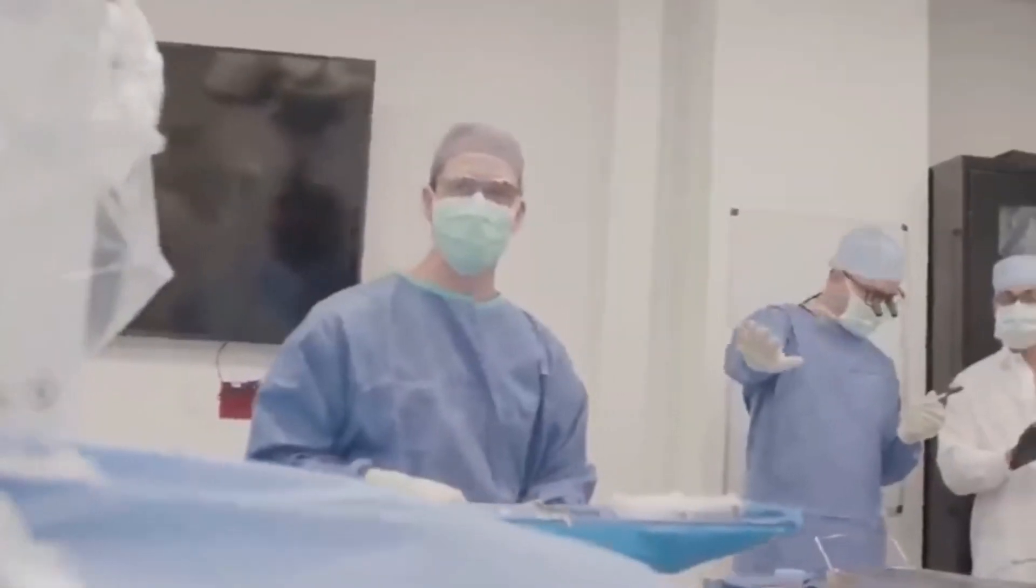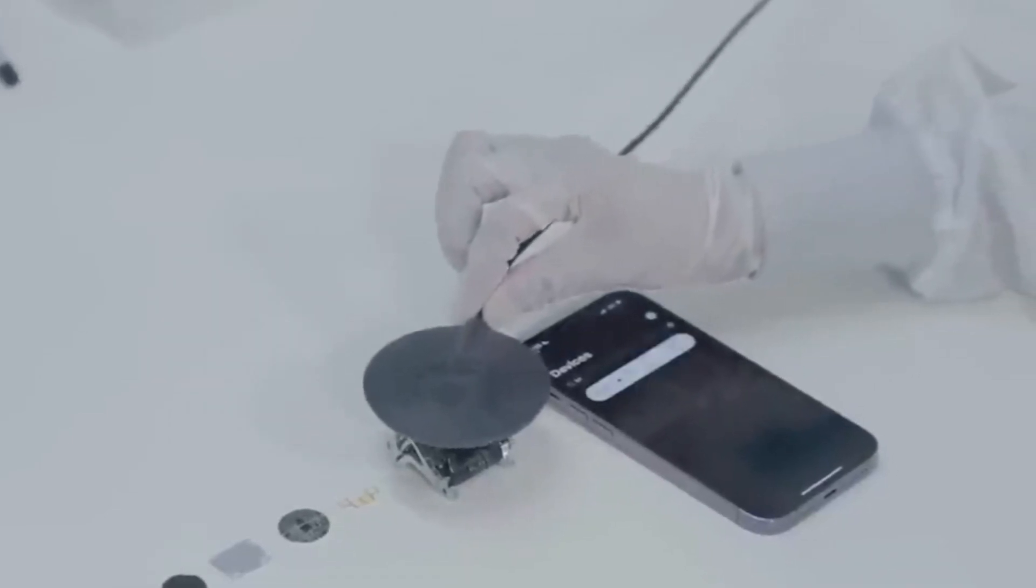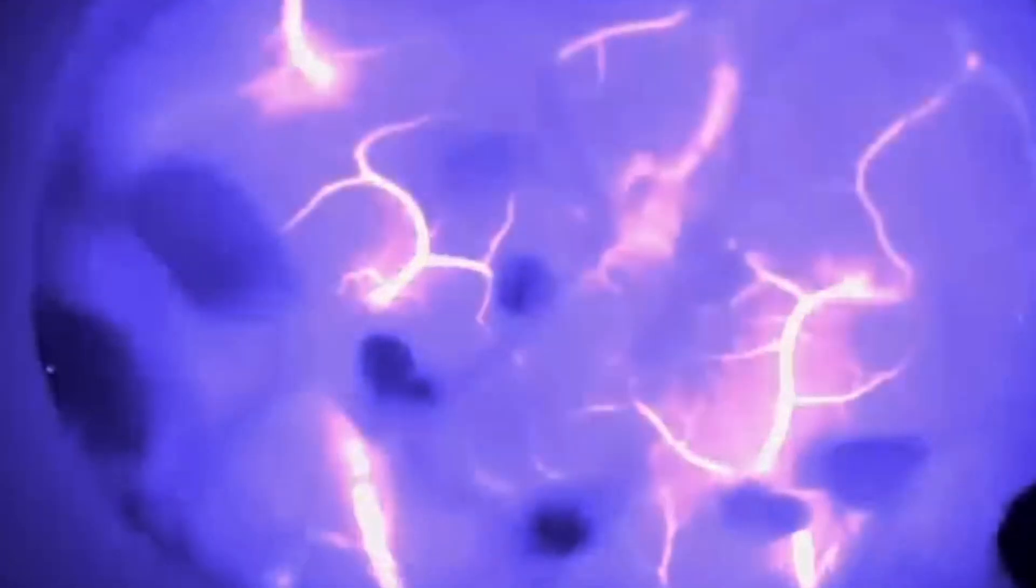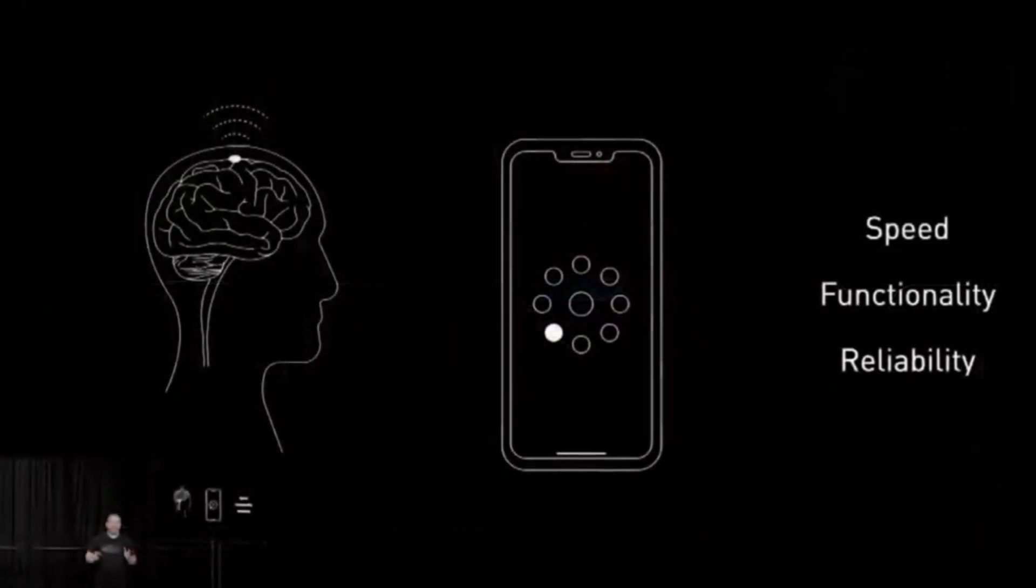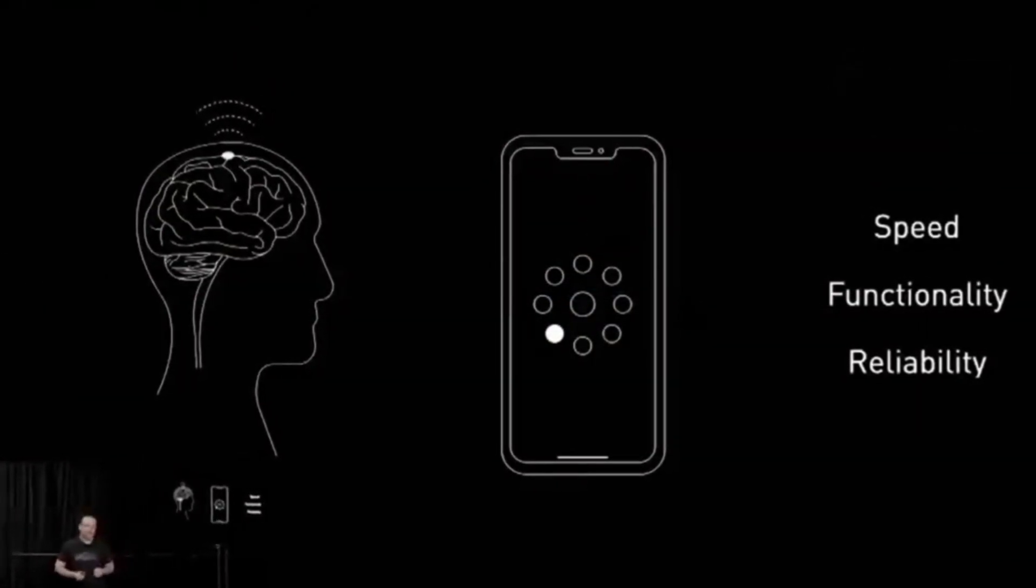These predictions came after a rare update from Musk and Neuralink executives on the company's progress during a live stream on X. Musk revealed that Neuralink plans to surgically implant its experimental brain chip in a second patient within the next week.